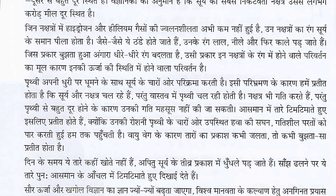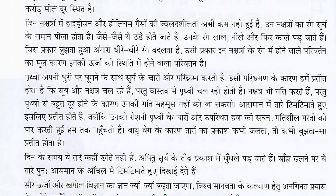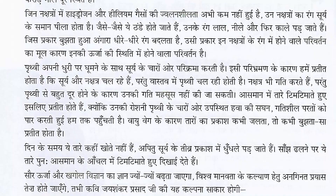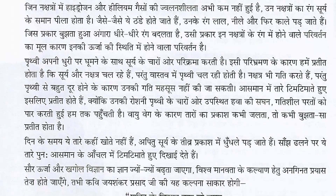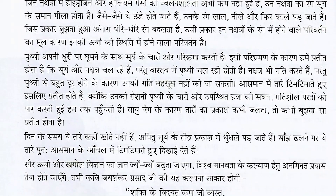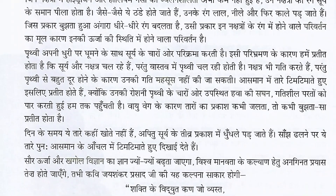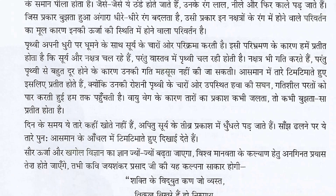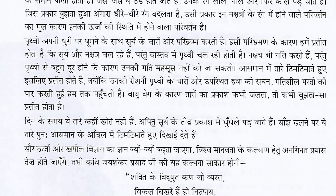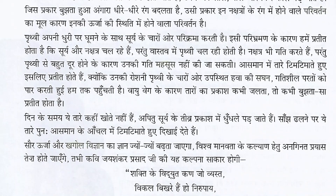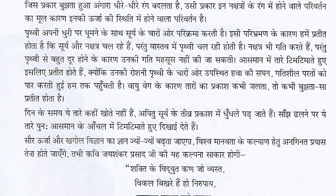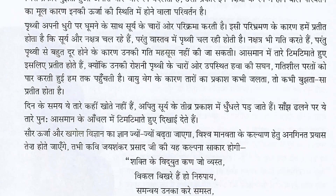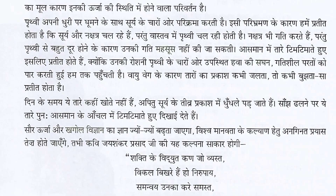पृत्वी अपनी धुरी पर घूमने के साथ सूरे के चारों ओर परिभ्रमण करती है। इसी परिभ्रमण के कारण हमें प्रतीत होता है कि सूरे और नक्षत्र चल रहे हैं, परन्तु वास्तव में पृत्वी चल रही होती है। नक्षत्र भी गति करते हैं परन्तु पृत्वी से बहुत दूर होने के कारण उनकी गति महसूस नहीं की जा सकती। आसमान में तारे टिम टिमाते हुए इसलिए प्रतीत होते हैं क्योंकि उनकी रोशनी पृत्वी के चारों ओर उपस्थित हवा की सघन गतिशील परतों को पार करती हुई हम तक पहुंचती है। (Earth rotates on its axis and also revolves around the Sun. Due to this revolution, it appears to us that the Sun and stars are moving, but actually it is the Earth that is moving. Stars also move but their movement cannot be felt due to their great distance. Stars appear to twinkle because their light passes through the dense moving layers of air surrounding Earth before reaching us.)